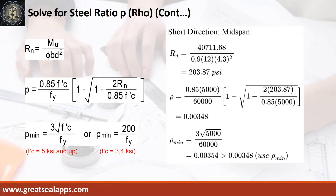Given short direction, mid-span moment equals 40,711.68 inch-pounds. Resistance factor equals 0.9, b equals 12 inches, and d equals 4.3 inches. The beam design ratio RN equals 203.87 PSI, and reinforcement ratio rho equals 0.00348. Use rho minimum of 0.00354.